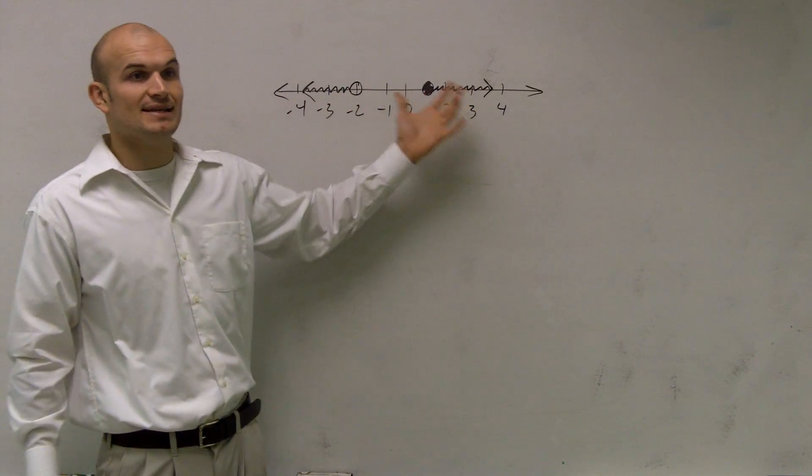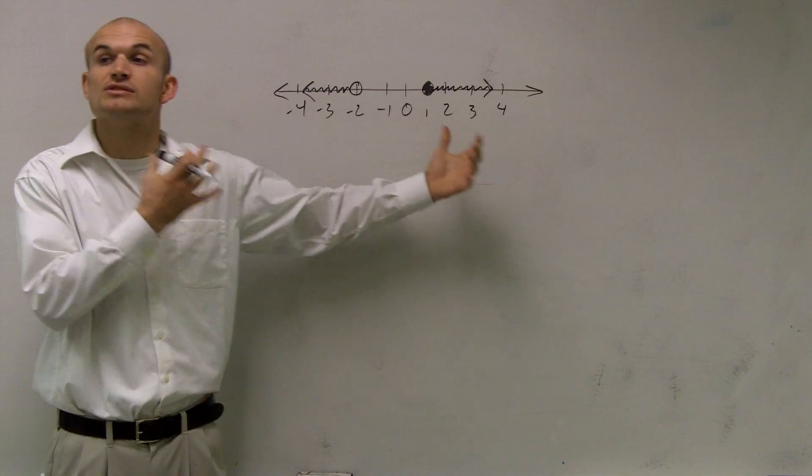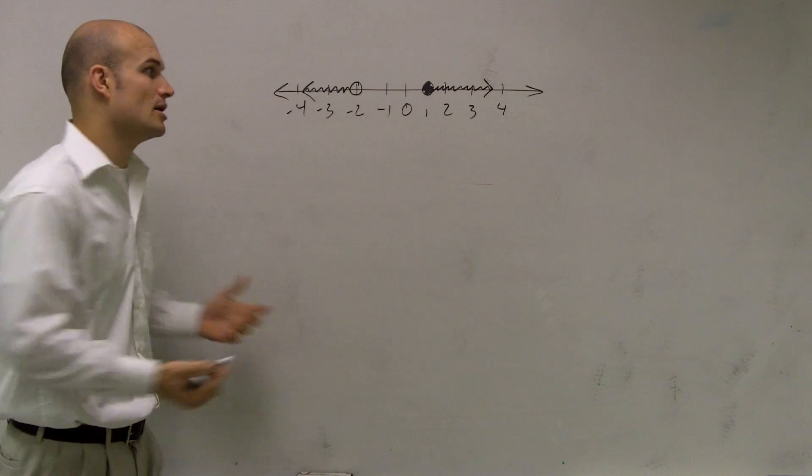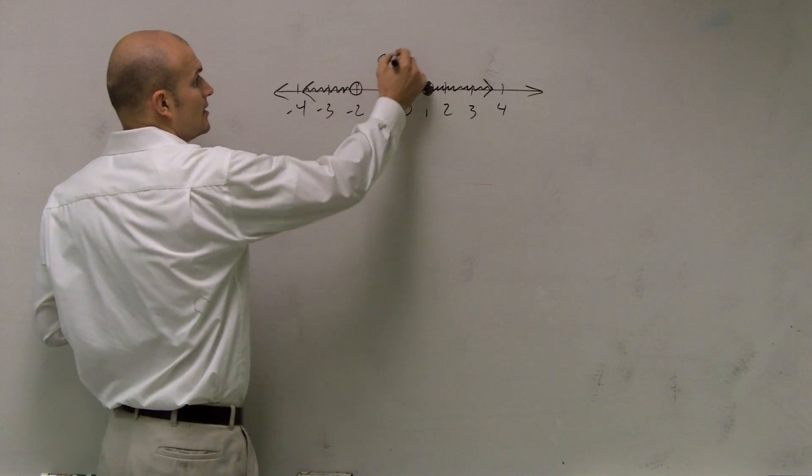One thing is I'm not taking the intersection of these two graphs, right? These are two separate graphs. So therefore, that's going to automatically tell me I'm going to be using an or statement.